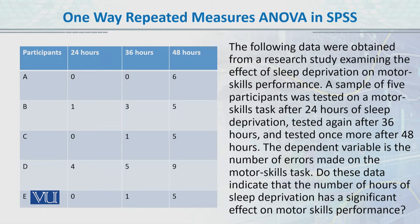This is the example we are going to solve for Repeated Measures ANOVA. The following data were obtained from a research study examining the effect of sleep deprivation on motor skill performance. A sample of five participants were tested on a motor skill task after 24 hours of sleep deprivation, tested again after 36 hours, and tested once more after 48 hours. The dependent variable is the number of errors made on the motor skill task.